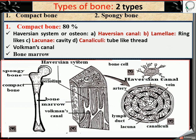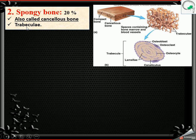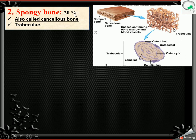Now the spongy bone. In spongy bone, there is no Haversian system or osteon. Instead, the structural unit present is called trabeculae. Spongy bone makes up around 20% of the total skeletal system, while compact bone is around 80%. Spongy bone is also called cancellous bone.